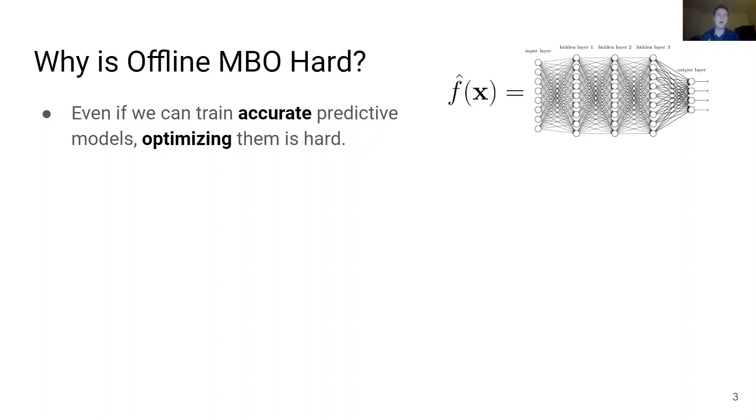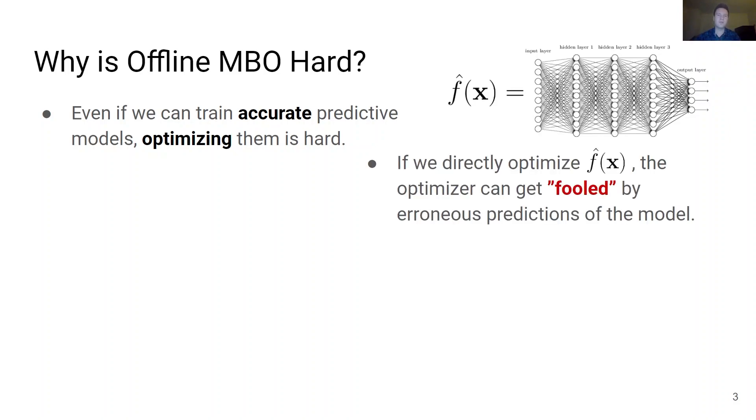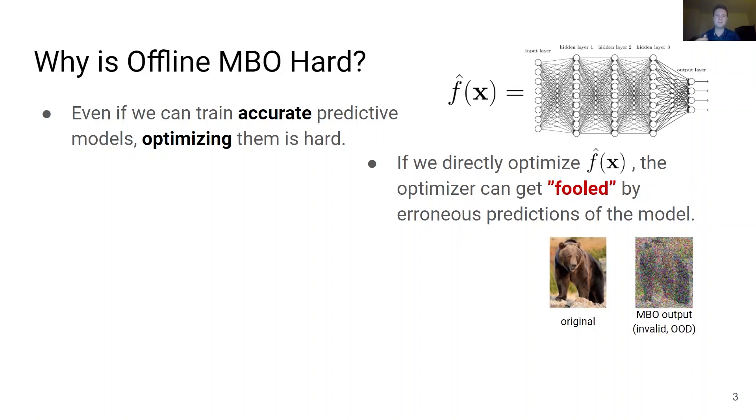Suppose we train a powerful predictive model using modern deep learning techniques that is able to make accurate predictions on training and validation sets. If we were to directly optimize the predictions of such a model, the optimizer can get fooled by erroneously high predictions from the model. When this happens, the quality of solutions found by the optimizer degenerates, like this adversarial example generated from a picture of a bear which is out of distribution. These adversarial examples are found especially easily when optimizing designs using standard gradient ascent to maximize the predictions of a learned model.